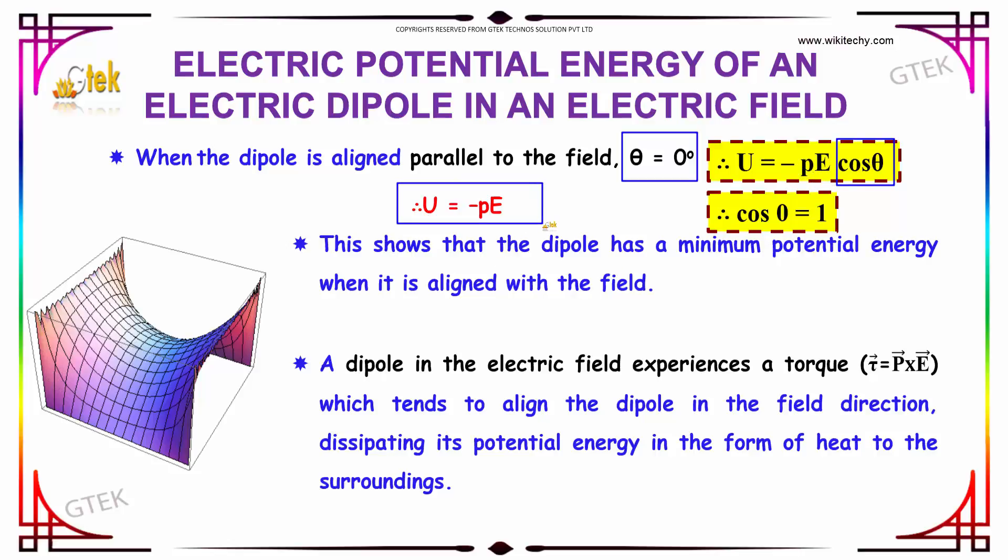Therefore, U = -pE. This shows that the dipole has a minimum potential energy when it is aligned with the electric field.